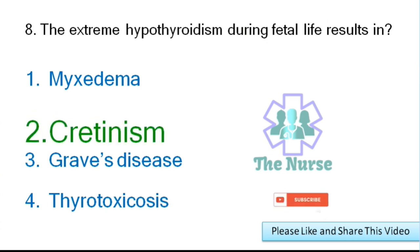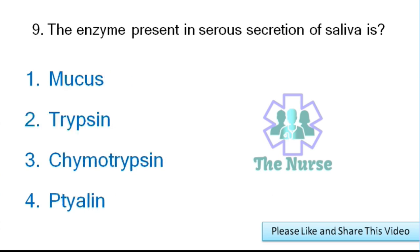Next question: The enzyme present in serous secretion of saliva is which of the following? Options: mucus, trypsin, chymotrypsin, or ptyalin. Correct answer: ptyalin.